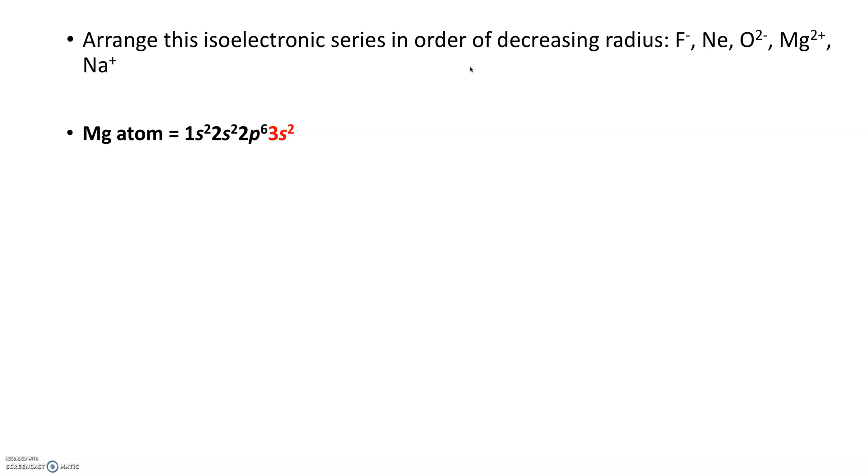The first thing is, let's think about—because they're saying isoelectronic—they probably want you to think in terms of ions and electrons because the number of electrons is going to determine the radius.